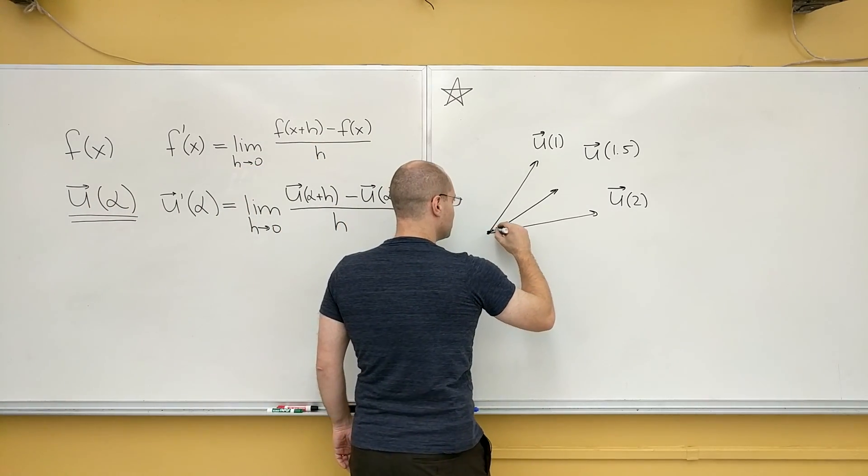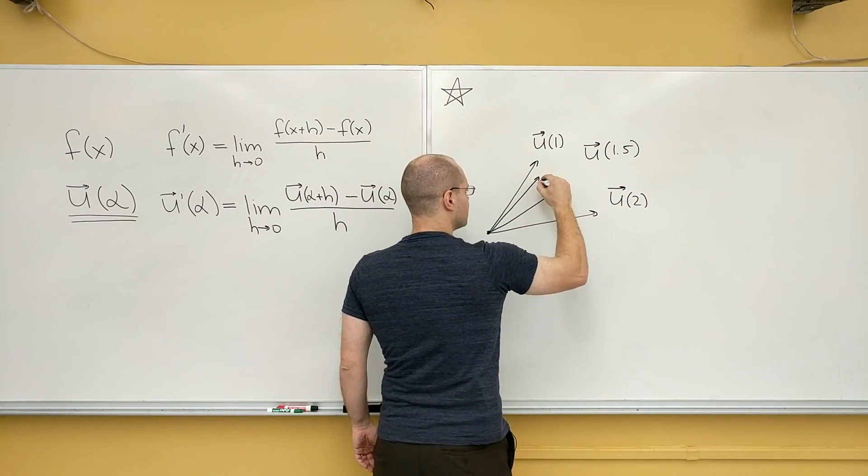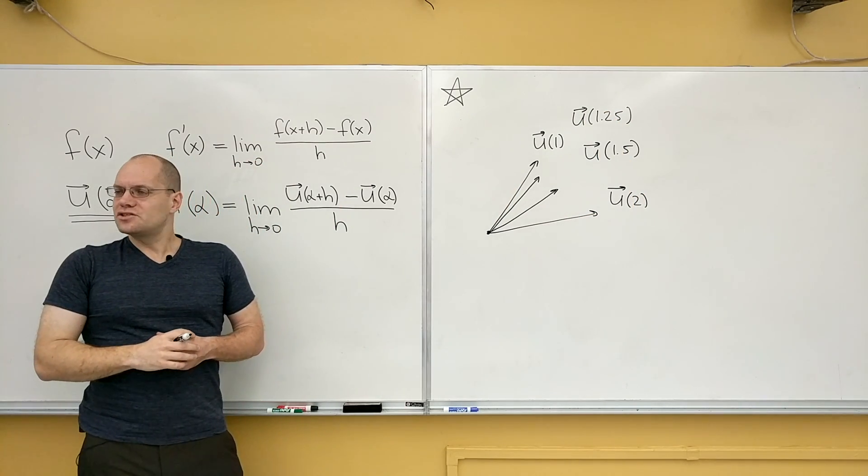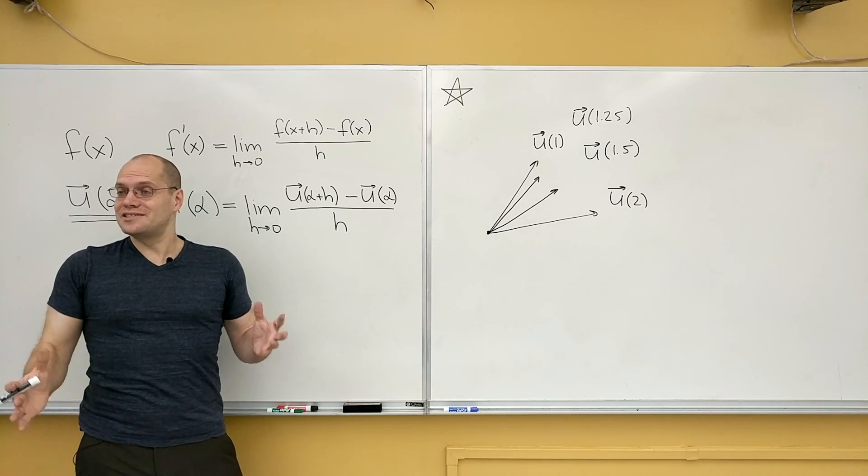Now let's draw U of 1.25 in between. Well, if it's a reasonable function, it would fall somewhere here. And so if we collect all of the tips of the vectors,